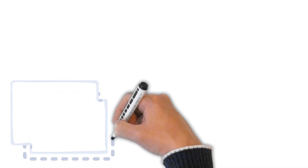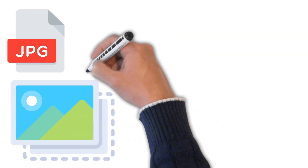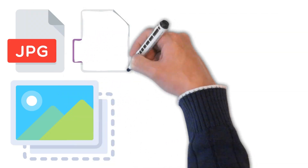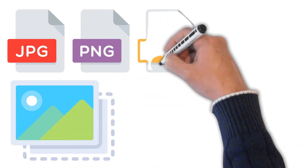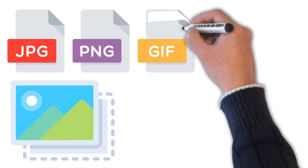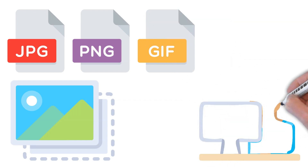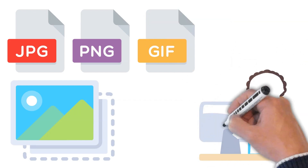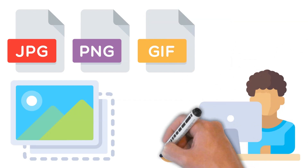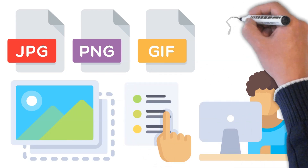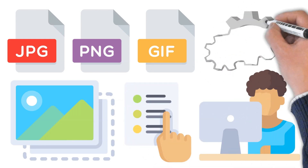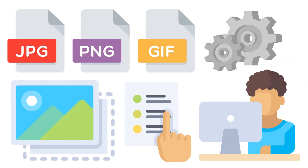Every image you see — photos, logos, or memes — is stored in a specific file format. JPEG, PNG, GIF: each has different strengths and uses. But what sets them apart and which one should you use? In this video, we'll break down common image formats, how they work, and when to use them. Let's dive in.